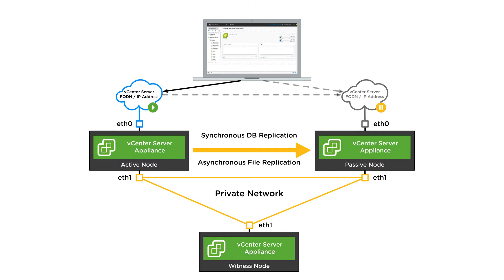There are very few requirements for this network. It just needs to be a port group within your vSphere cluster, and we just require layer three connectivity between each of the nodes. We don't require a strict layer two, and we can route the traffic.